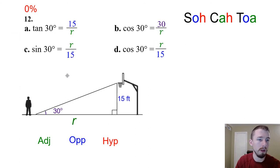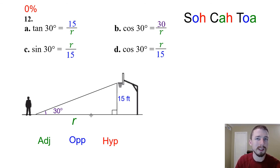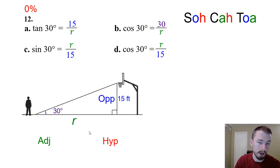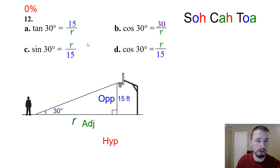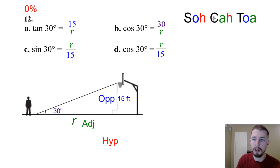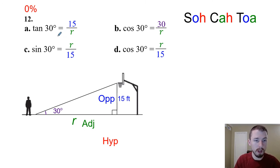Number twelve — the angle of elevation is 30°, the height of the basketball goal is 15 feet, and R is the horizontal distance. Label sides: 15 is opposite and R is adjacent, so we use tangent. tan 30° = 15 / R. There's only one answer choice using tangent, so that confirms it. To solve for R: switch the order, so R = 15 / tan 30°. Answer: A.